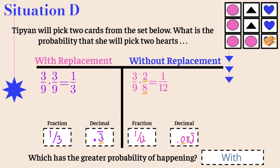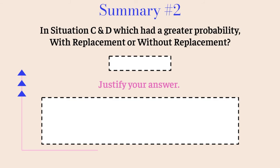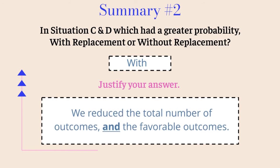Let's summarize situations C and D. With replacement had the greater probability in both cases. The justification: when we did without replacement, we reduced both the total number of outcomes and the number of favorable outcomes. This was different from situations A and B, where we only removed outcomes we didn't want. Here, we got rid of favorable outcomes, which hurt our chances — we want as many favorable outcomes as possible for a greater probability.